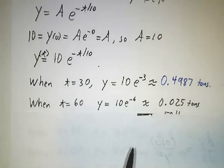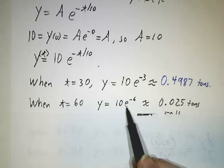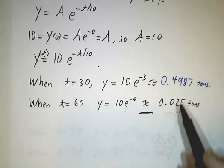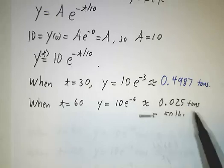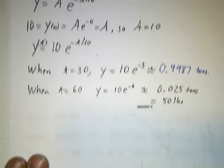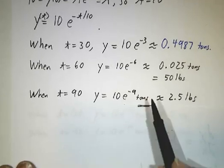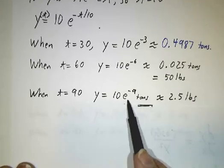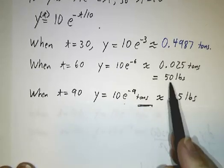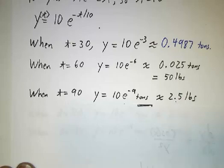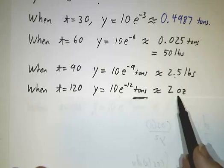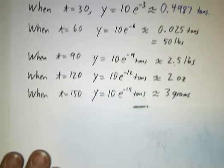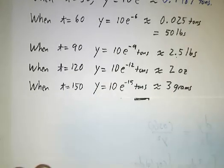After another 30 days, we're down to 10 e to the minus 6, which is a twentieth of that. We're down to a fortieth of a ton, or about 50 pounds. After another month, we're 10 e to the minus 9, which is a twentieth of that. It's 2.5 pounds. Another month, and we're a twentieth of that. That's about 2 ounces. Another month, we're a twentieth of that, and we're down to 3 grams.